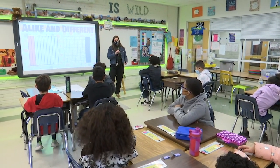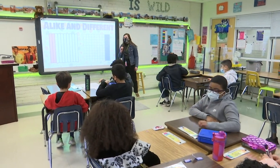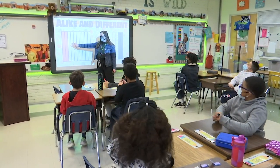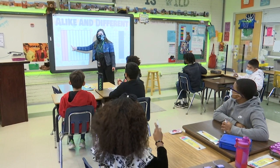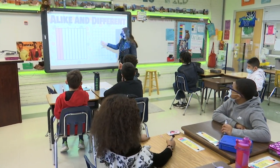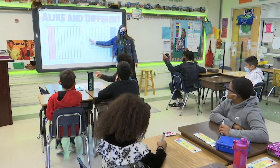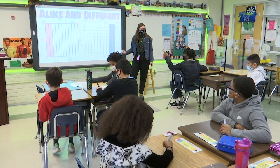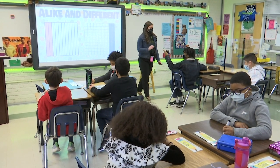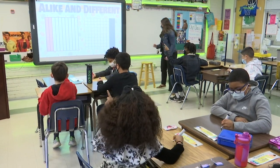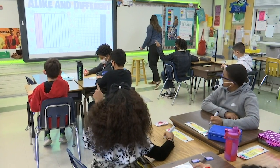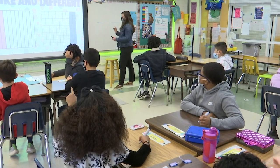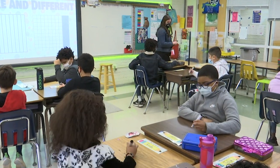On your desk you have an expo marker. Go ahead and uncap that expo marker. I want you to write down what is the fraction that this model represents and what is the fraction that this model represents. Think about which is our numerator and what part is our denominator. Take a second on your desk and write that out. So you should have two fractions right beside each other.